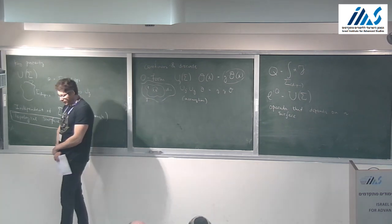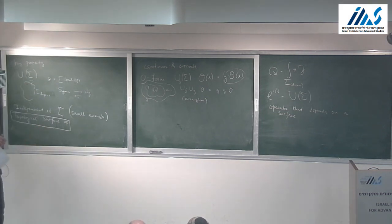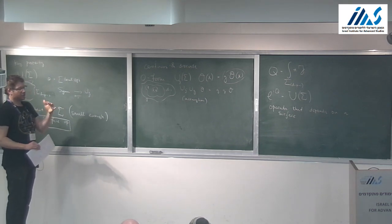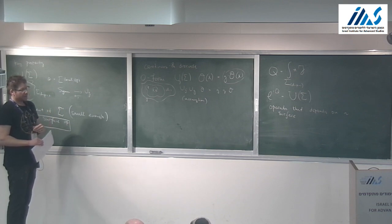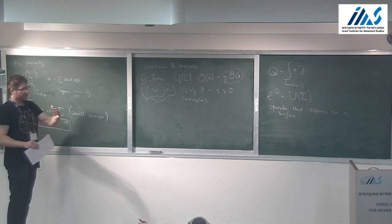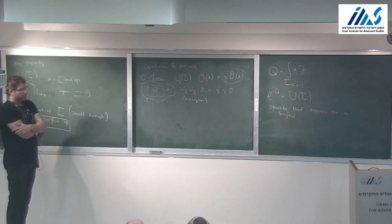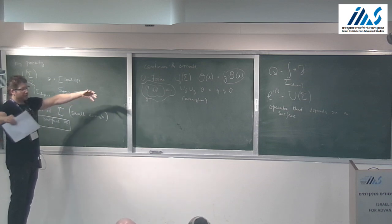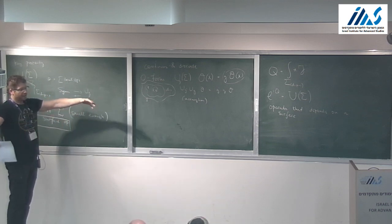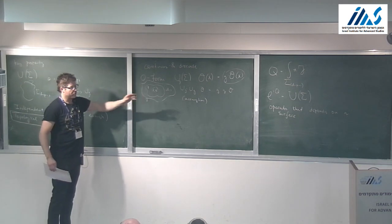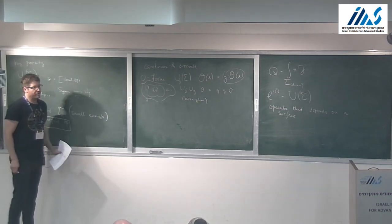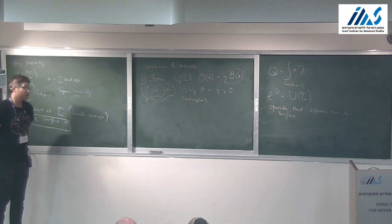The usual terminology is that each topological surface operator is one charge. The fact that there are topological surface operators doesn't mean there are infinitely many symmetries. Rather, we think of topological surface operators as the generators of symmetries. In the full theory there is only a finite number of generators typically.